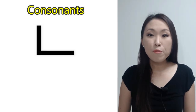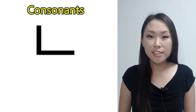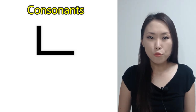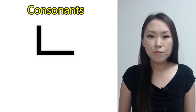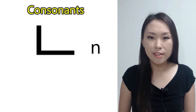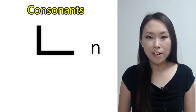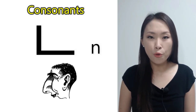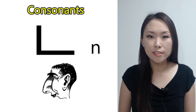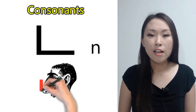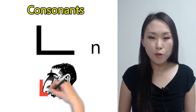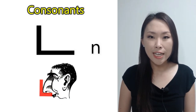The name of this consonant is ㄴ. The romanized letter for ㄴ is 'n'. ㄴ sounds like the letter 'n' in the word 'nose'. The shape of the nose looks like ㄴ.